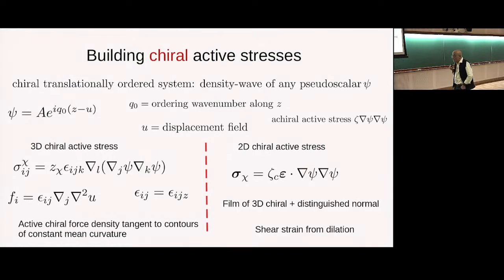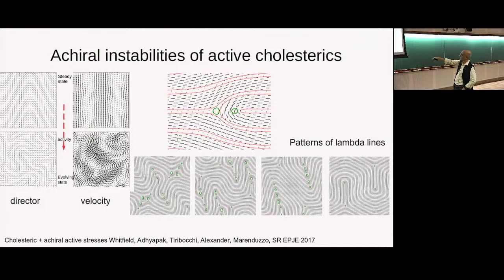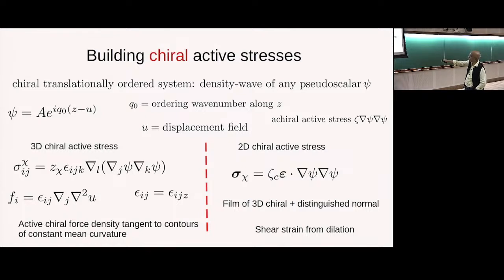For limited geometries you get interesting ordered modulated structures; for unbounded geometries, a kind of active turbulence. Now let's build chiral active stresses. The simplest chiral active stress for a system in which psi is a scalar is of the form epsilon_{ijk} grad_l grad_j psi grad_k psi, with coefficient z_chi. Expanding this in the density wave state and expressing in terms of the displacement field gives an interesting object: a force density tangent to contours of constant mean curvature — L-squared u is the local mean curvature. So if you've got a bump like this, you'll get a forcing on the contours around that bump.